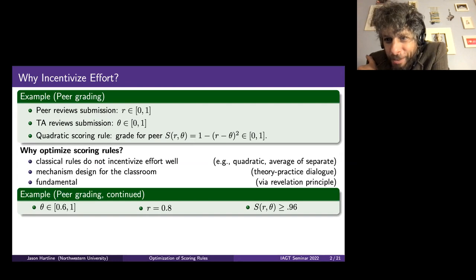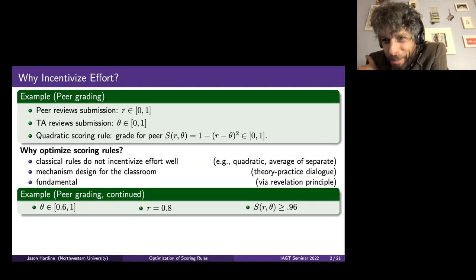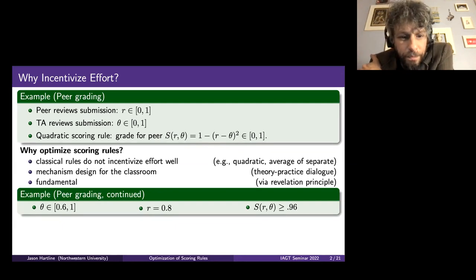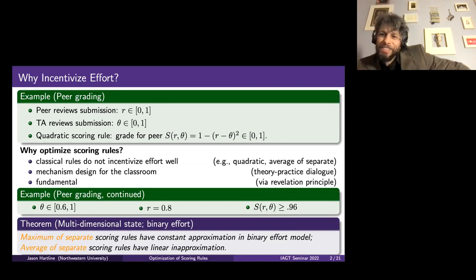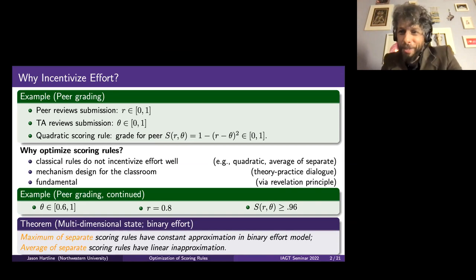For a classroom environment, it's very natural to assume you can't assign people negative scores and can't assign scores above 100%. You end up in an environment where you're choosing a score between 0 and 1. If I want to always produce a score between 0 and 1 and use the quadratic rule, then this is actually the quadratic scoring rule with the most incentive when scores are required to be between 0 and 1 and the state is between 0 and 1.